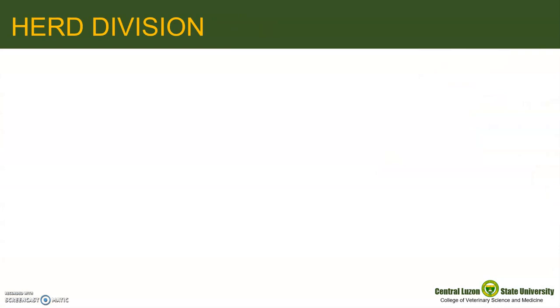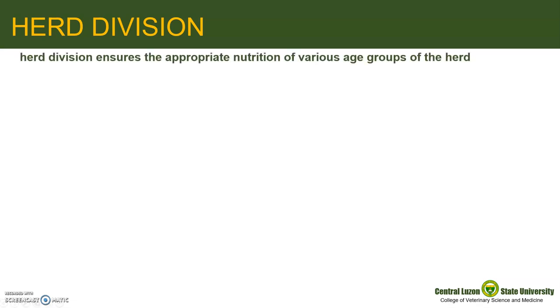For us to easily grasp the management in a typical beef or dairy farm, let us identify first why we need to perform herd division. For practical reasons, herd division ensures the appropriate nutrition of various age groups of the herd. Nutritional requirements of large ruminants are directly related to age. If we perform one herd management system in a farm with varying animal age, adult animals will often deprive younger animals of feed.